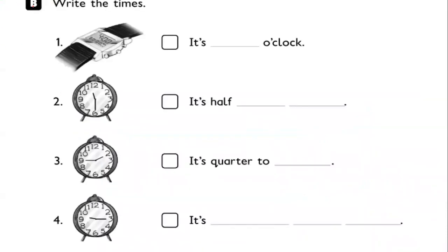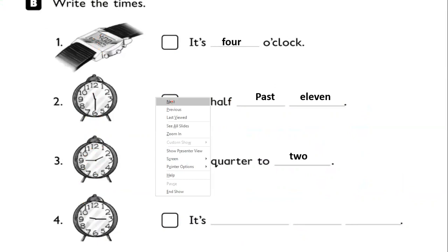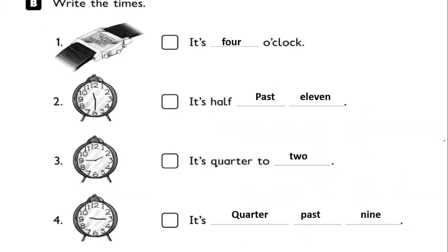Here we have the last question: find the times. So here we can say it is four o'clock. What about this one? It is half past eleven. What about this? It is quarter to two. And what about this one? It is quarter past nine.